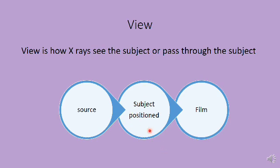Another example: if a person is standing as a subject with their chest facing the source and their back facing the film, rays pass through the chest from anterior to posterior — this is again AP view. If the person turns around so the film is towards the chest and the back faces the source, the exposure becomes PA view, with rays passing from posterior to anterior.